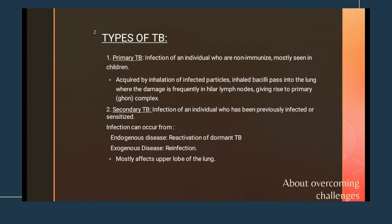Secondary tuberculosis affects individuals who have been previously infected or sensitized. It can occur in two ways: endogenous disease, which is the reactivation of dormant or inactive TB leading to latent tuberculosis infection, or exogenous reinfection, where the patient again inhales tubercle bacillus. Secondary tuberculosis mostly affects the upper lobe of the lungs, not the whole lung.